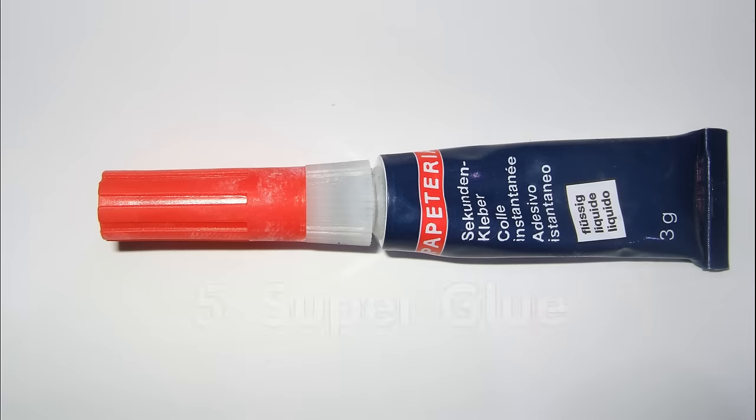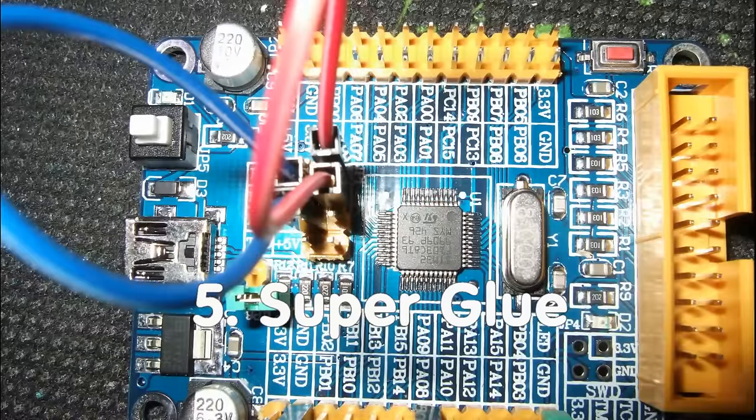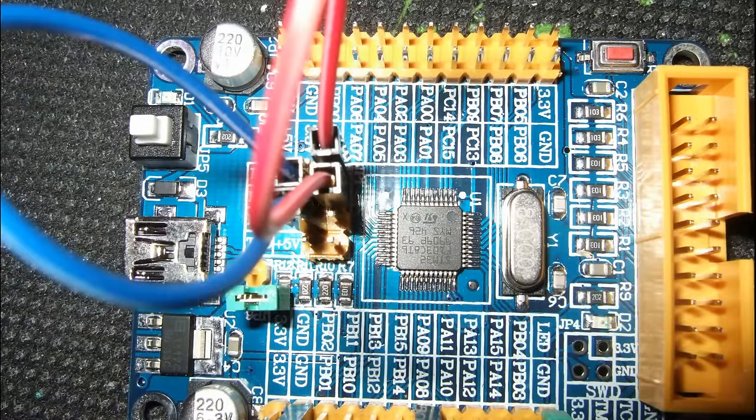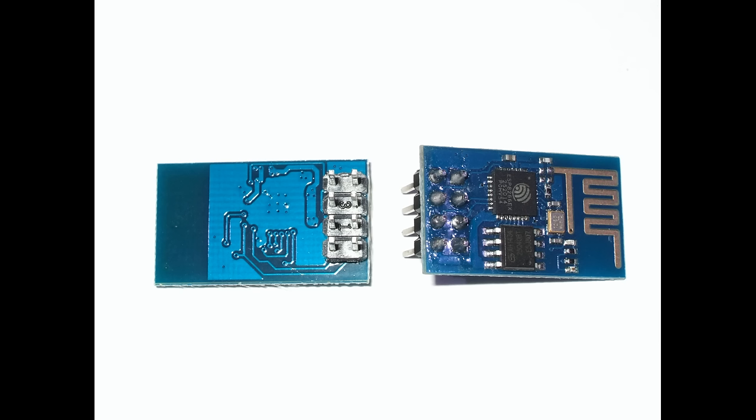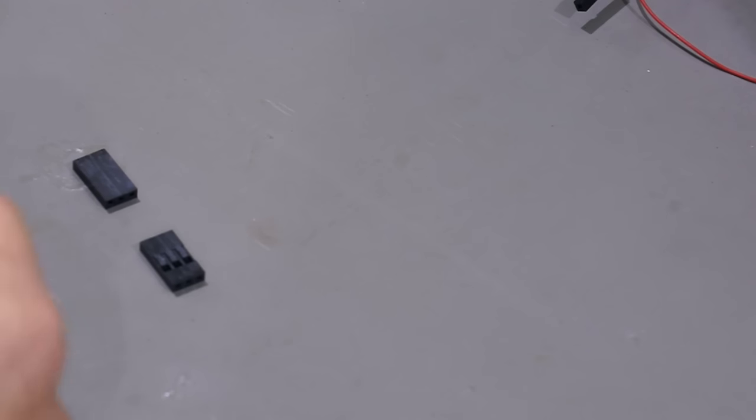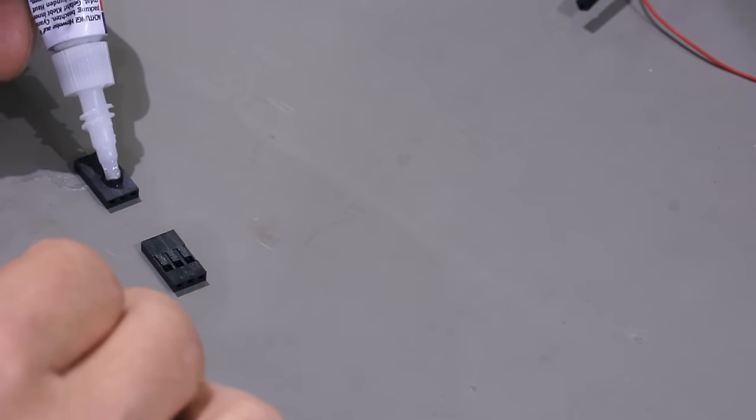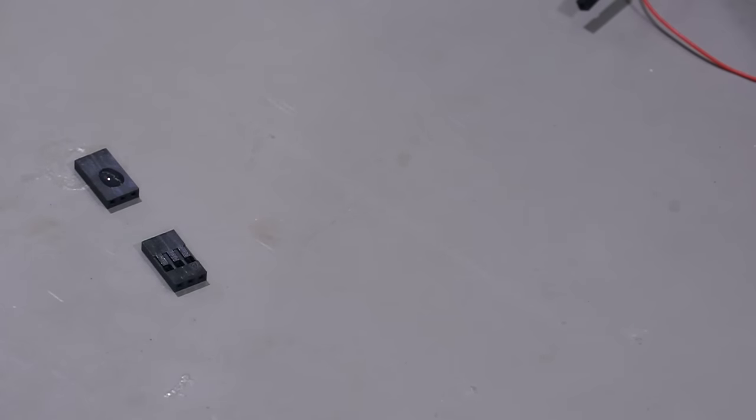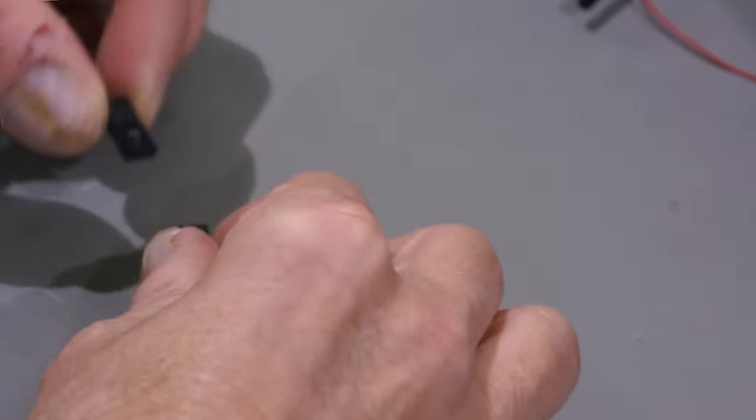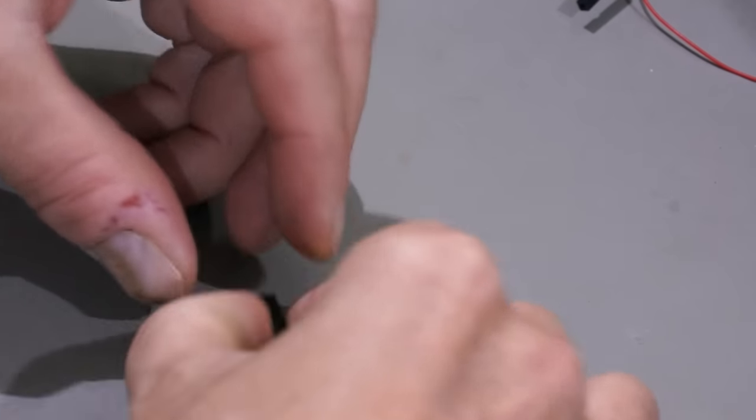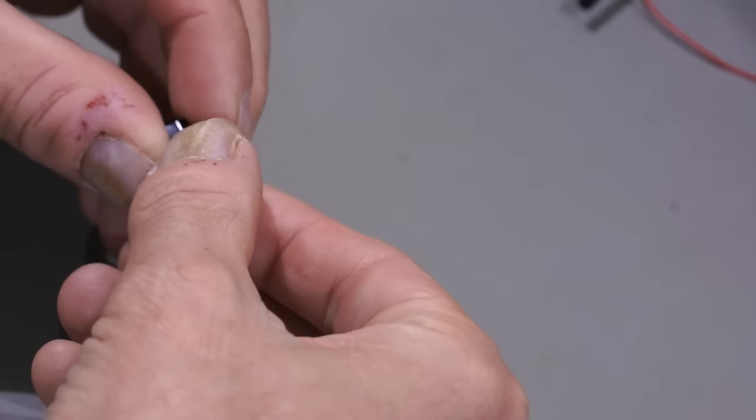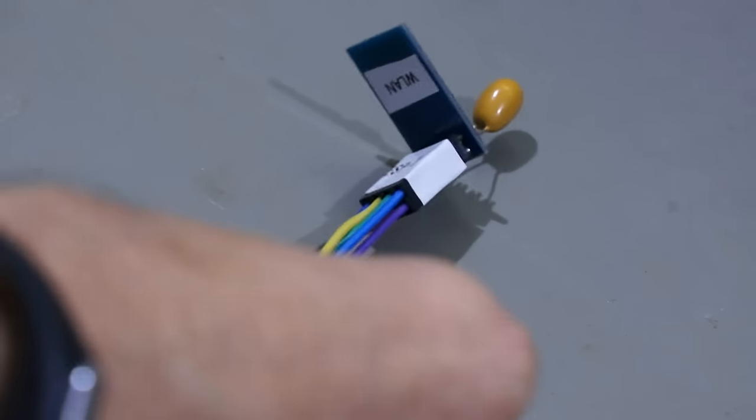Trick number five: Superglue. Sometimes I have connectors with more than one row. Examples are the STM32 boards or the ESP01 module. I could buy empty shells with two rows to solve this problem. I solve it differently. I take two empty shells with the necessary length and glue them together. With this trick, I can fabricate my own two-row connectors just as fast as connectors with one row.